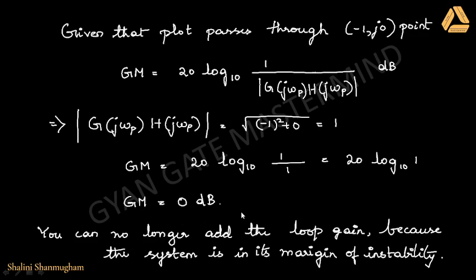When the Nyquist plot meets the critical point (−1, j0), you can infer that you can no longer add loop gain to alter the system, because the system is already at the margin of instability. You cannot add any more loop gain. This is the inference you can make when the gain margin is 0 dB. Thank you.